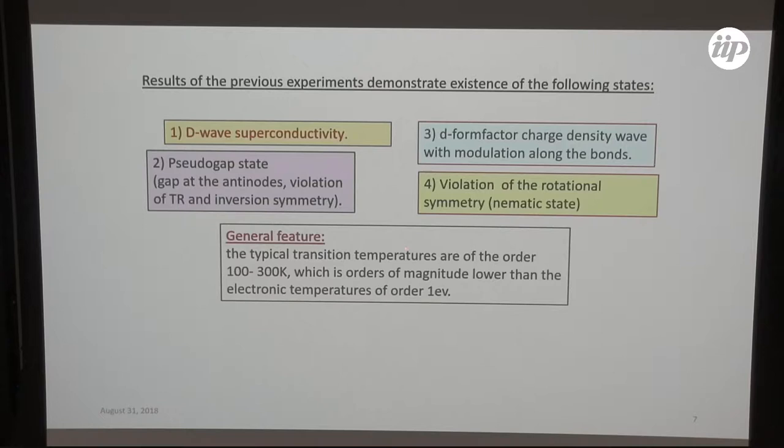What is general feature? Why we wanted to propose some more low energy effective model? All these transition temperatures, everything happens on the temperature range of 100-300 Kelvin, which is much lower than electronic temperatures. Then one can start thinking why not suggest some model that could be relevant for this region.